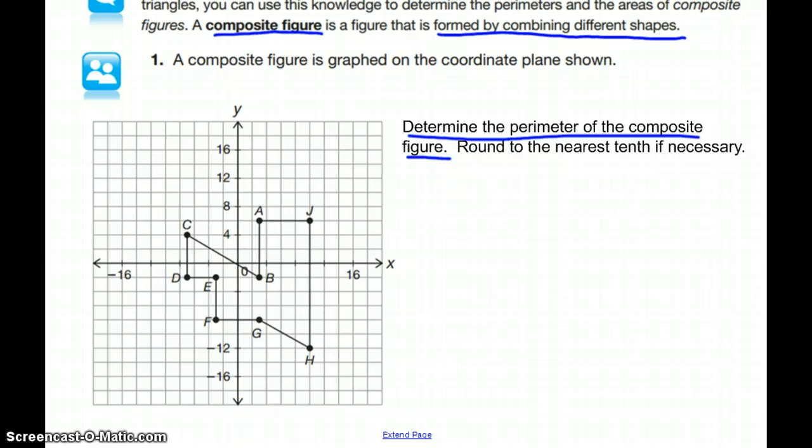As we find the perimeter, perimeter is the distance around the figure. That means we want to add up all the sides.